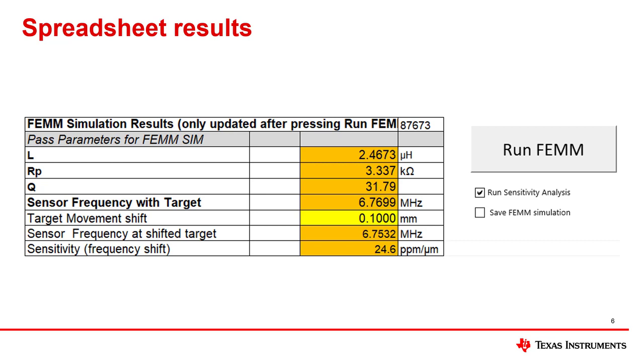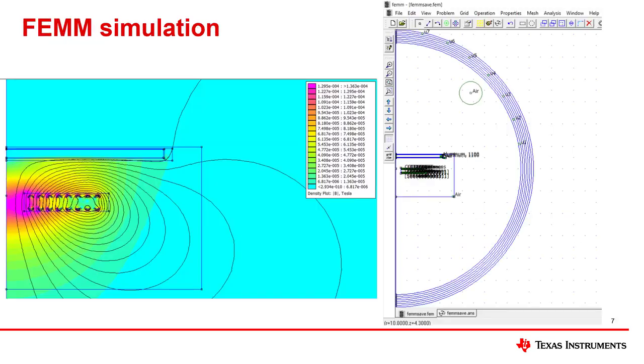The target shift also shows how much frequency change is expected on the sensor for the given target motion. The FEM simulation can be opened and the magnetic field of the sensor coil can be viewed.